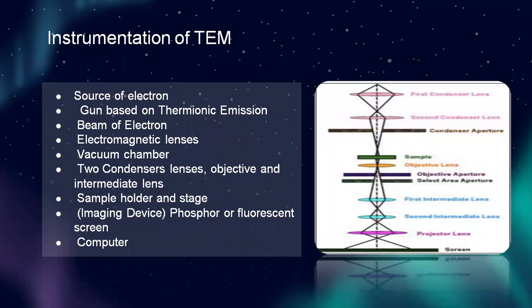I will discuss the instrumentation of transmission electron microscope. First, source of electrons. Second, gun based on thermionic emission. Third, beam of electrons. Fourth, electromagnetic lenses. Fifth, vacuum chamber. Sixth, two condenser lenses — objective and intermediate lens. And the sample holder and stage; imaging device including phosphor or fluorescent screen; and last, computer.